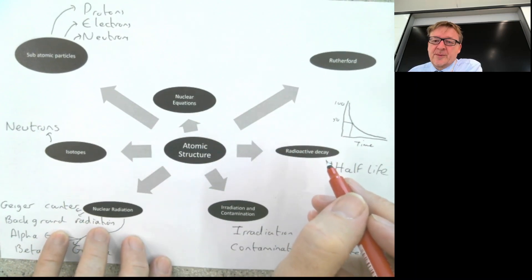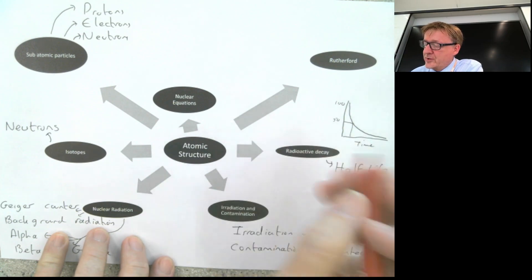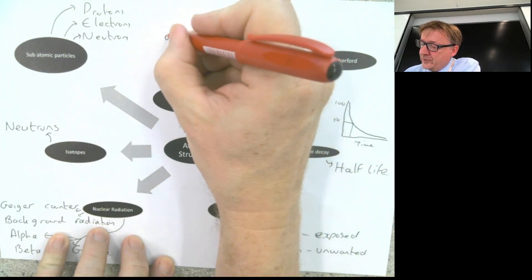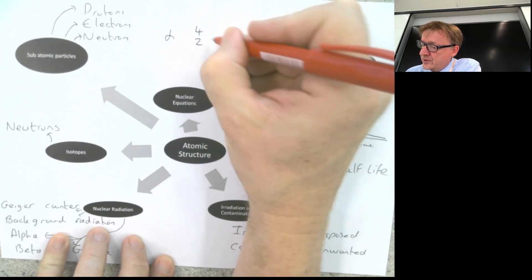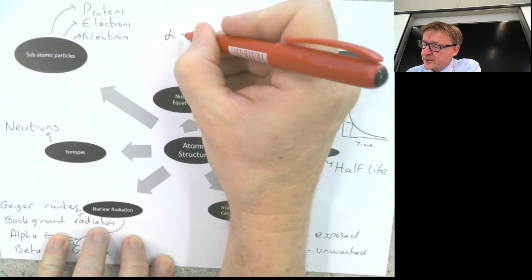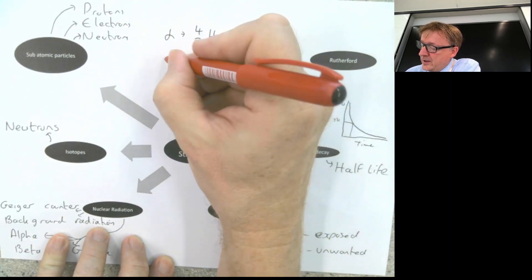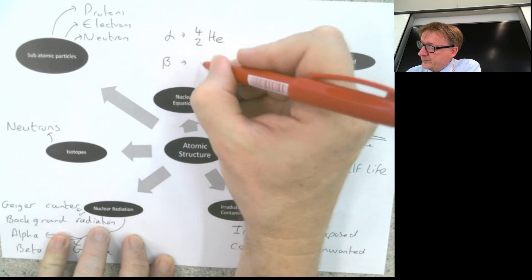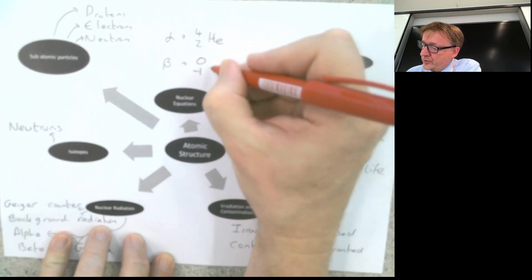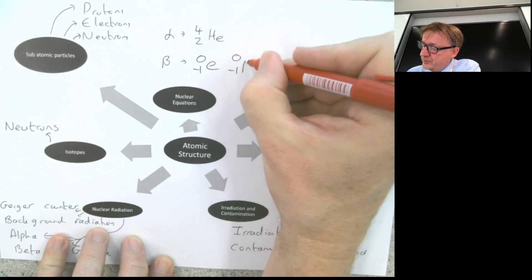Nuclear equations. What you might do, and this is the simplest that there could ever be, but you've got to remember, an alpha particle is four, two, helium, and it's these numbers that matter. So an alpha particle is four, two, helium. A beta particle is nought minus one, an electron, or it can sometimes be written as nought minus one beta.